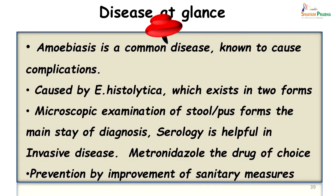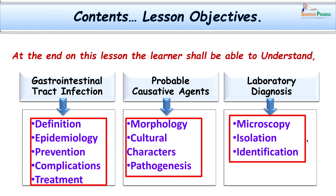Amoebiasis is a common disease known to cause complications. It is caused by Entamoeba histolytica, existing as trophozoite and cyst forms. Microscopic examination of stool forms the mainstay of diagnosis. Stool examination along with serology will help confirm the disease — especially in invasive disease, antibody and antigen detection are important. Metronidazole is the drug of choice, and prevention is by improving sanitary measures. With this we have covered all the contents of this class and achieved our lesson objectives — learning about amoebiasis, Entamoeba histolytica, and laboratory diagnosis of such cases. Thank you.